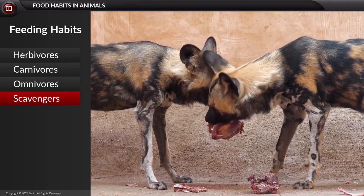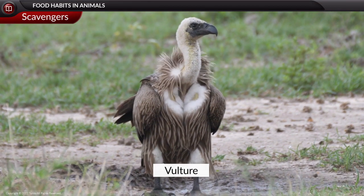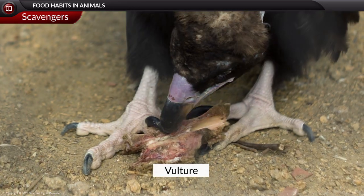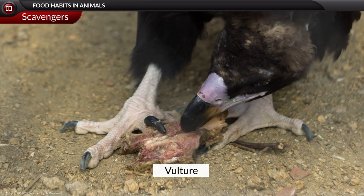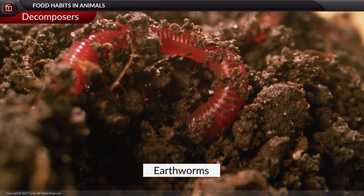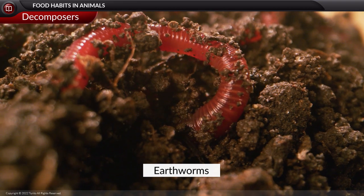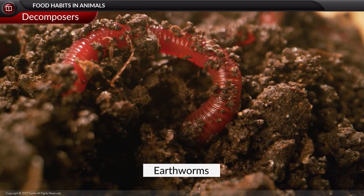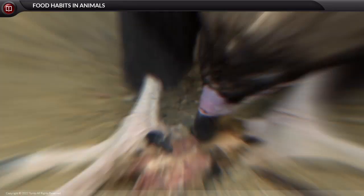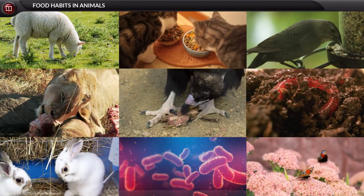Apart from herbivorous, carnivorous, and omnivorous animals, there are two other groups: scavengers and decomposers. Scavengers are organisms that feed on the dead bodies of other animals — for instance, vultures feed on dead bodies and clean the surroundings. Decomposers obtain energy from dead and decaying matter; bacteria and fungi, though not animals, are decomposers that feed on decaying matter and clean the environment.